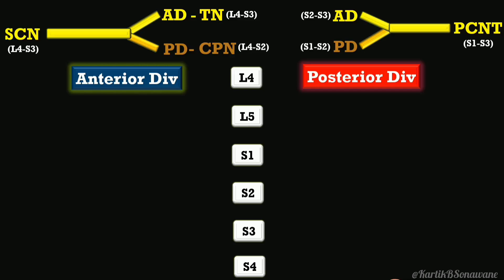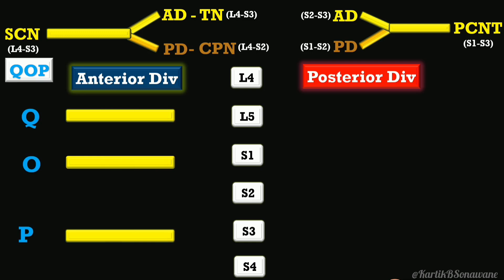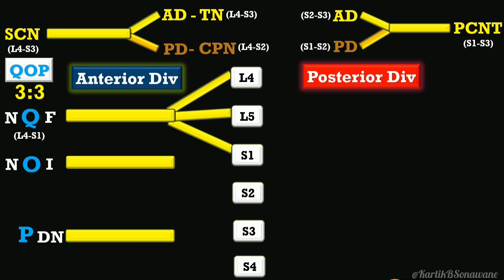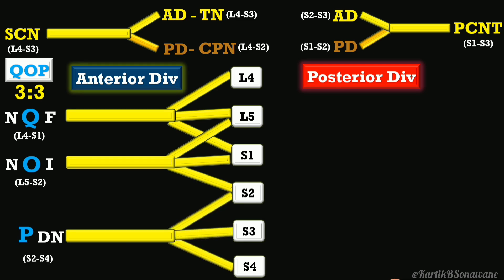For the anterior division branches, the mnemonic is QOP, standing for three nerves: nerve to quadratus femoris, nerve to obturator internus, and pudendal nerve. Use the formula 3-3 to remember all branches come from three roots. Nerve to quadratus femoris arises from the first three roots; nerve to obturator internus from the next three roots with some overlap. The pudendal nerve, arising from the anterior division, must include S4, so it arises from S2, S3, and S4.